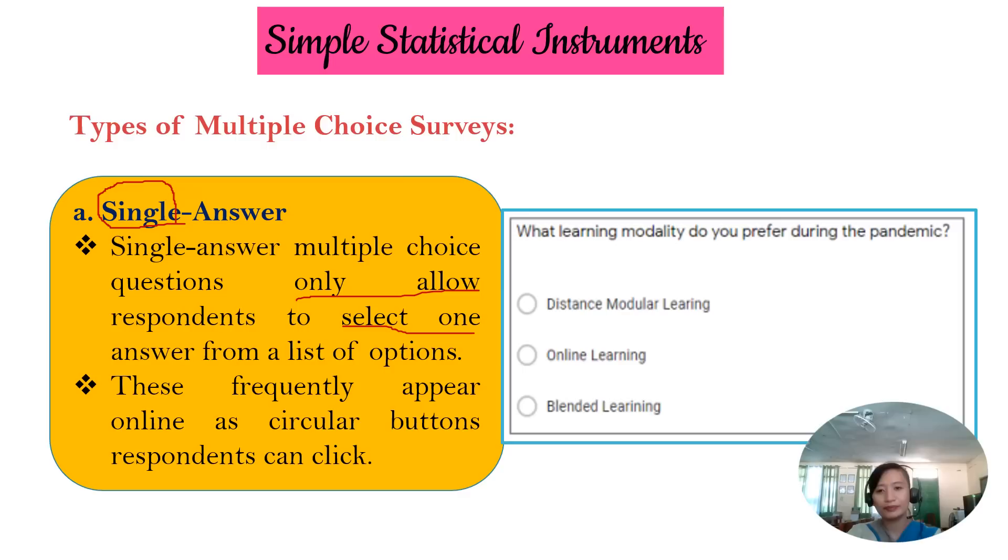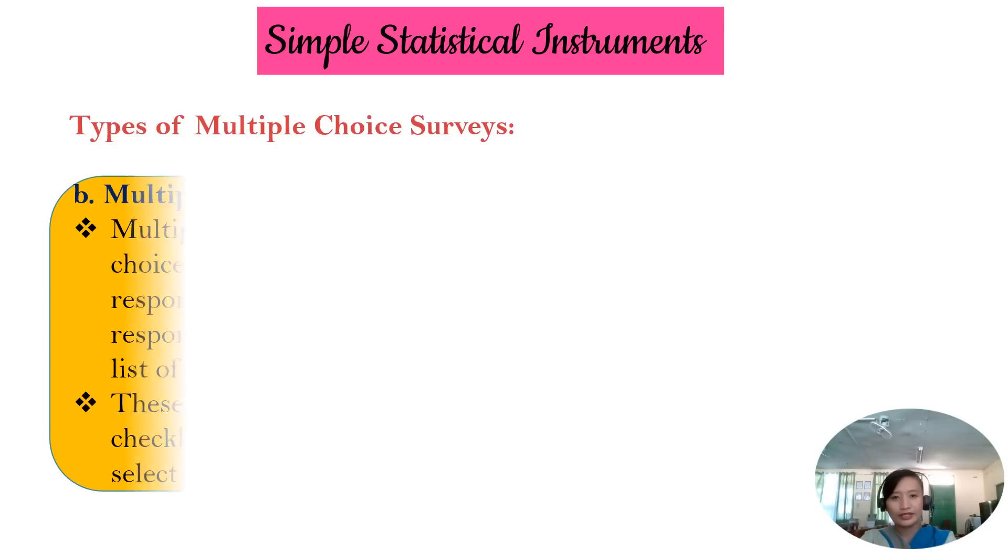From the word single, it means that you are only allowed to select one answer from the list of options. So even if you are given 10, 100 options, you just have to select one, only one answer. On the other hand, we have the multiple answer multiple choice survey. But here is an example of a single answer multiple choice. This frequently appears online as circular buttons respondents can click. So this is circular. And you can click if you like this. Then you can select this. But if not, you can select the other options. But you just have to select only one.